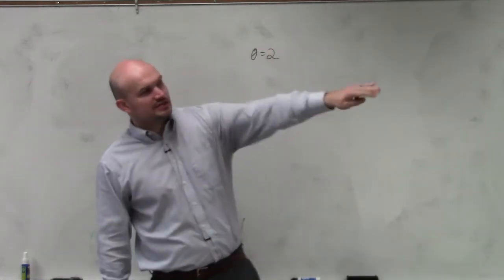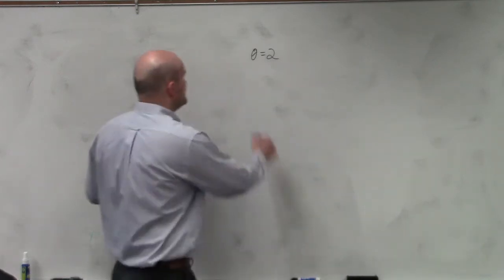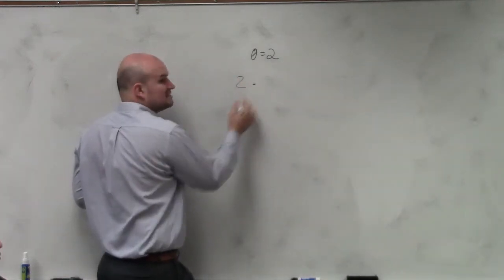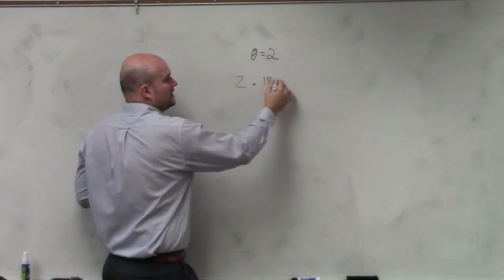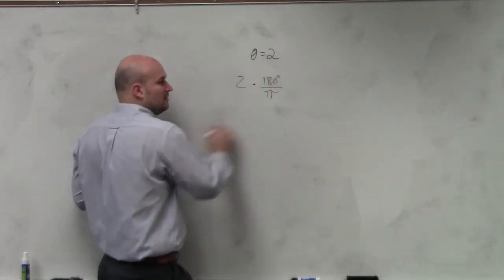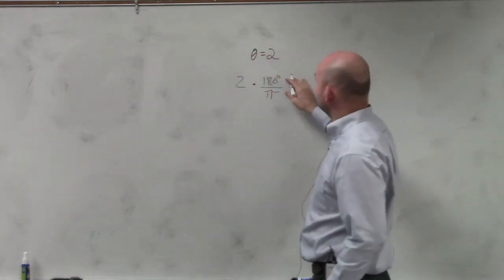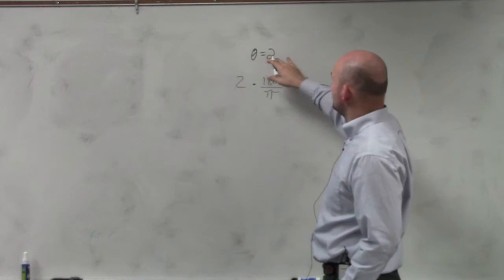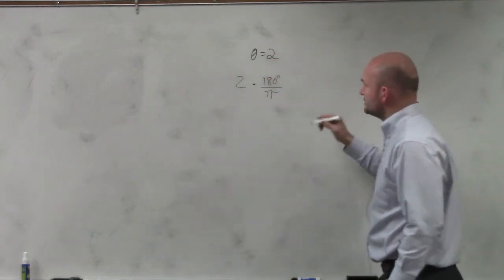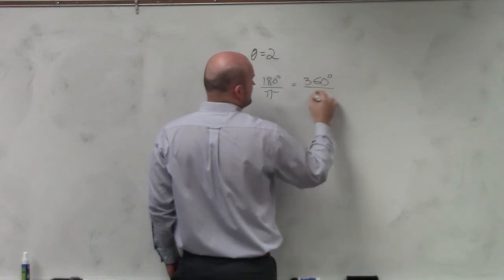So the student didn't show any work over there, but to convert from something in radians to degrees, we need to multiply our angle times 180 degrees over pi. Well, when we multiply this across, I'm sorry, we're converting from radians to degrees. So therefore, we multiply this. We have 360 degrees divided by pi.